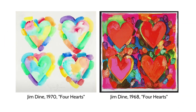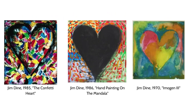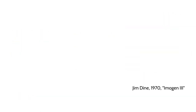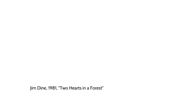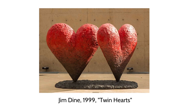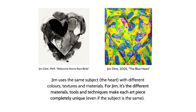Here are some examples of his art that features hearts. We see he does four hearts in many different materials, many different techniques, and many different styles. For Jim, it's not really the subject that's the important part of the artwork — it's the materials, and how the materials create a different feeling and make each piece super unique, even though it's the same subject, a heart, over and over.